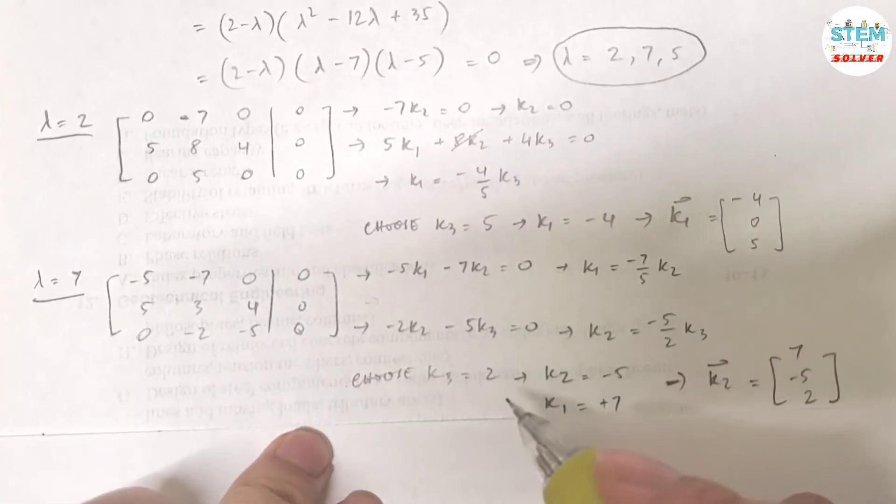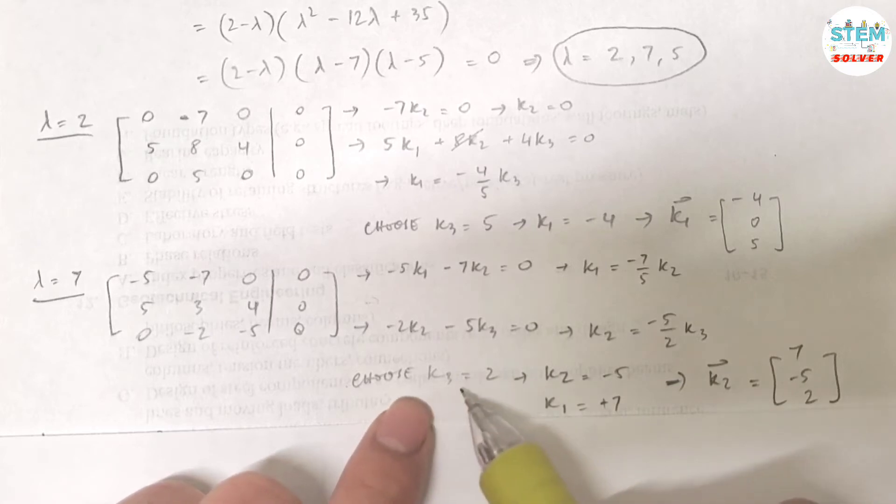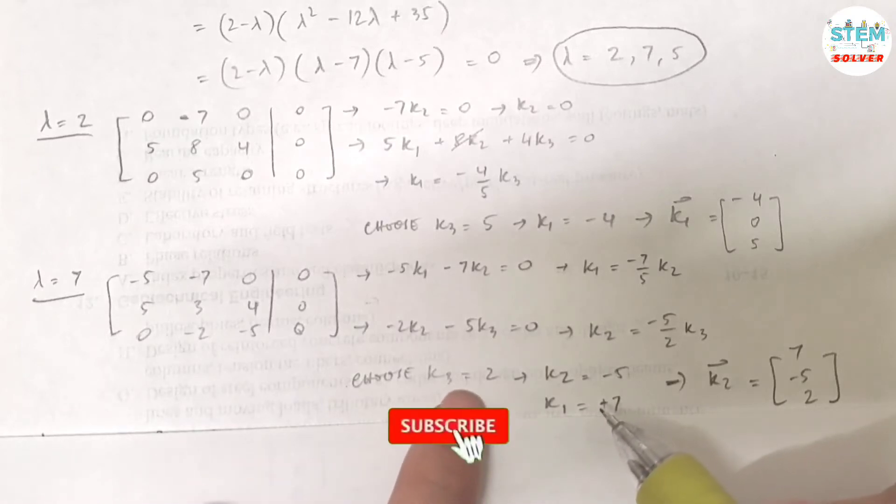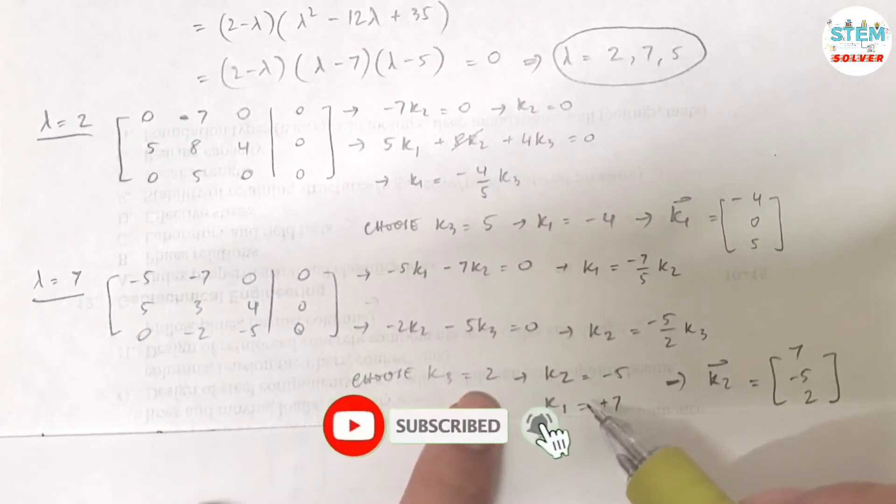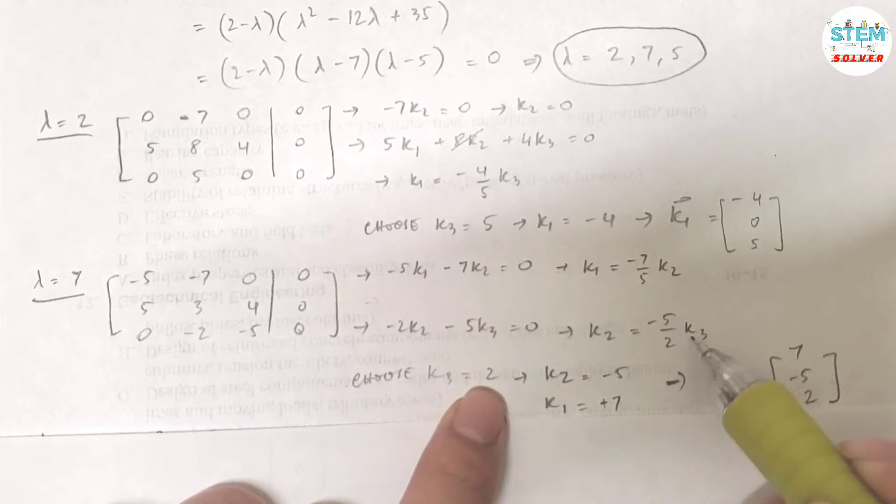Now let's do a random value for one of those k's. So if I choose k3 equals 2, that gives me k2 equals negative 5, k1 equals 7. You can choose whatever value for k3. The reason I chose 2 because I want to get rid of the fraction here. So if I chose 2, I got k2 equals negative 5.